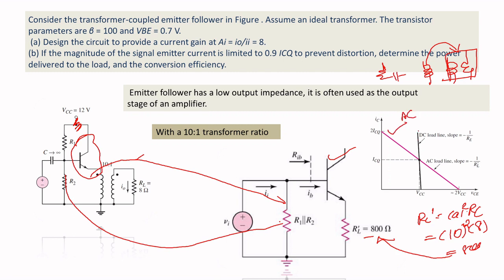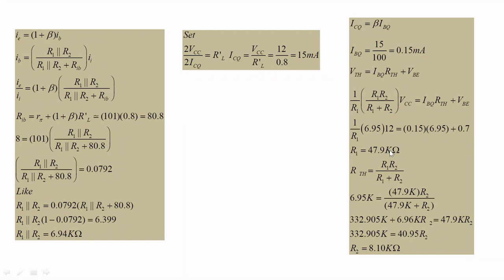In AC analysis, the transformer acts as an inductor which opposes changes in current, resulting in higher effective resistance. For the DC load line, there is negligible resistance. The Q-point (quiescent point) has a maximum voltage swing of 2VCC and maximum current swing of 2ICQ. The center voltage on the AC load line is VCC and center current is ICQ.